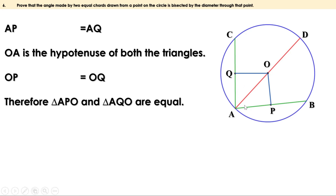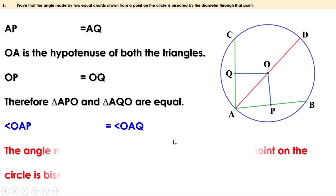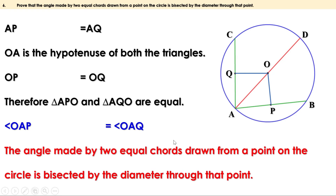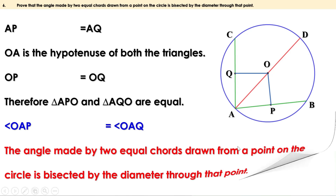Triangle APO and triangle AQO are equal. When two triangles are equal, the angles opposite to equal sides are equal. These two sides are equal, so the angles opposite to them are equal — that is, angle OAP equals angle OAQ. When these two angles are equal, we can say AD bisects angle A, or the angle made by the two equal chords drawn from a point on the circle is bisected by the diameter through that point.